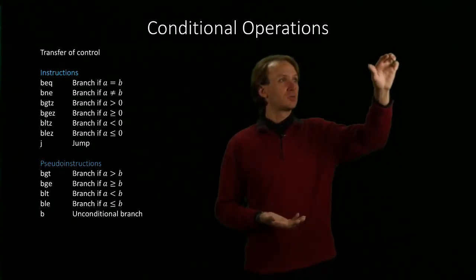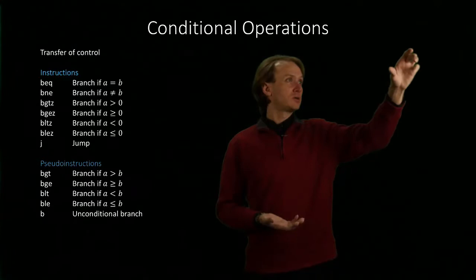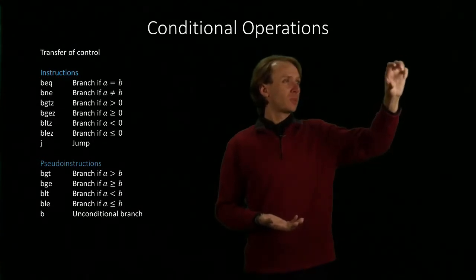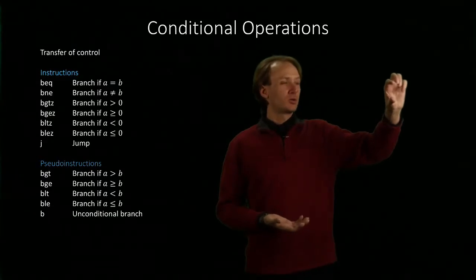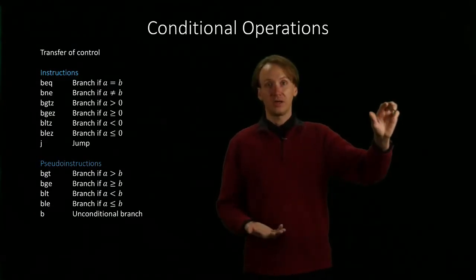Now I might have branch not equal a, b, else. Here's all my if code. Have my else label with the else code and then the end if label at the end.